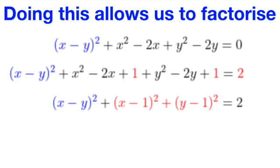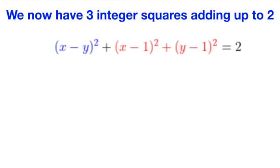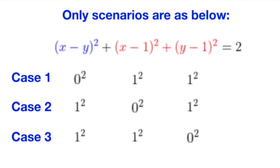Now we have 3 square integers adding up to 2, and so there must be 2 one squares and 1 zero square, subjected to permutations of the terms. It is easy then to solve the equations on a case-by-case basis.